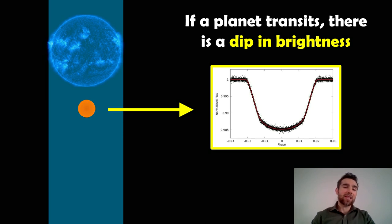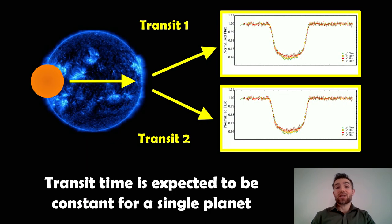We would also expect that each subsequent one should be the same time period. So we had transit one, the time between transit one and transit two should be the same as between transit two and transit three, because it relates to their orbital period.